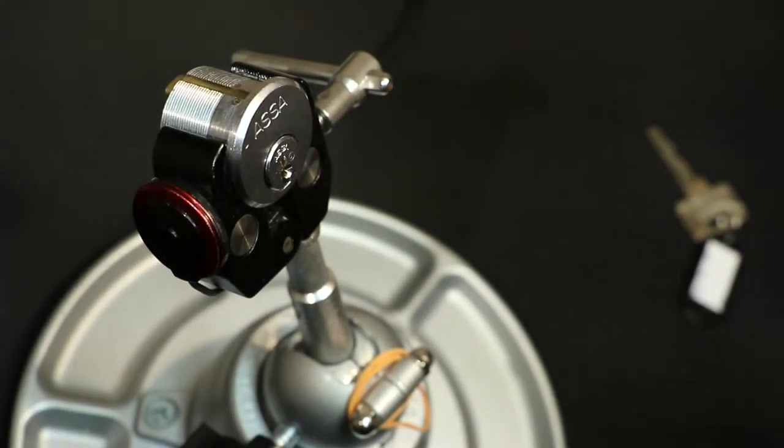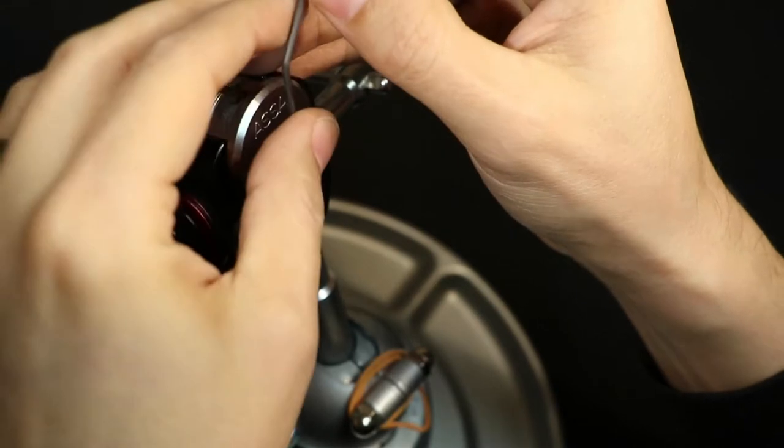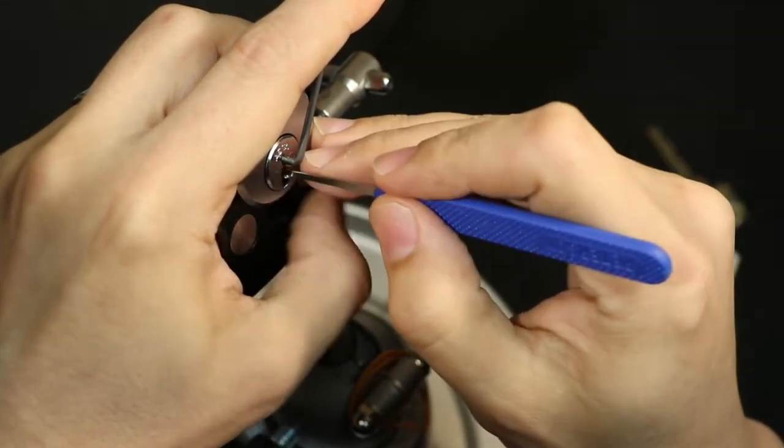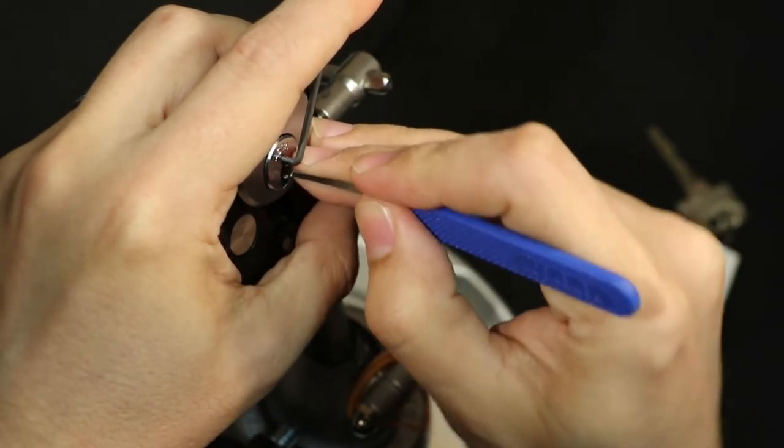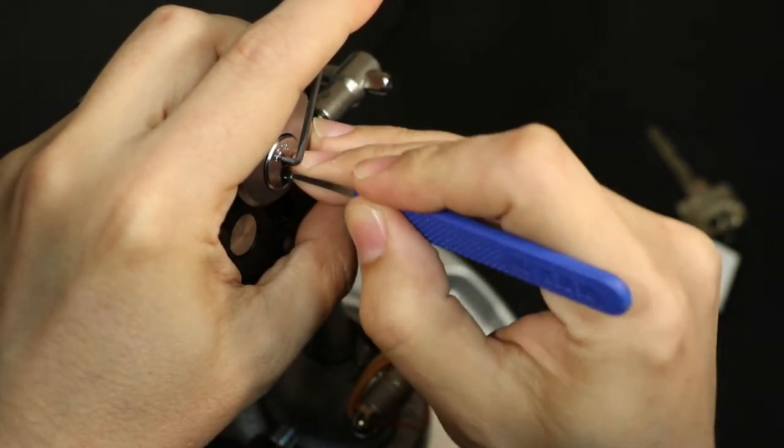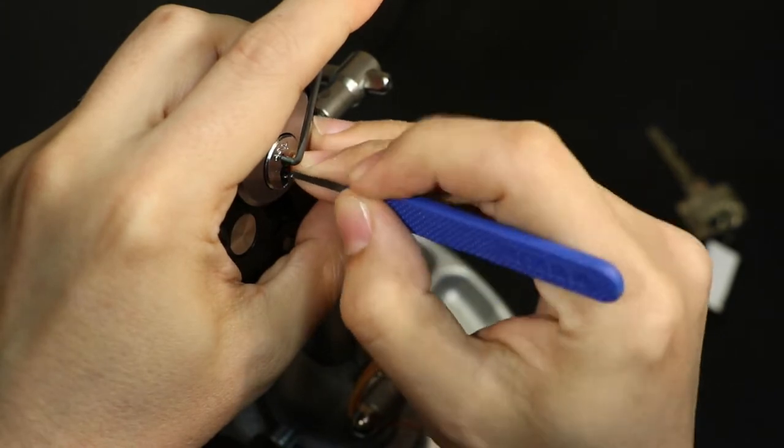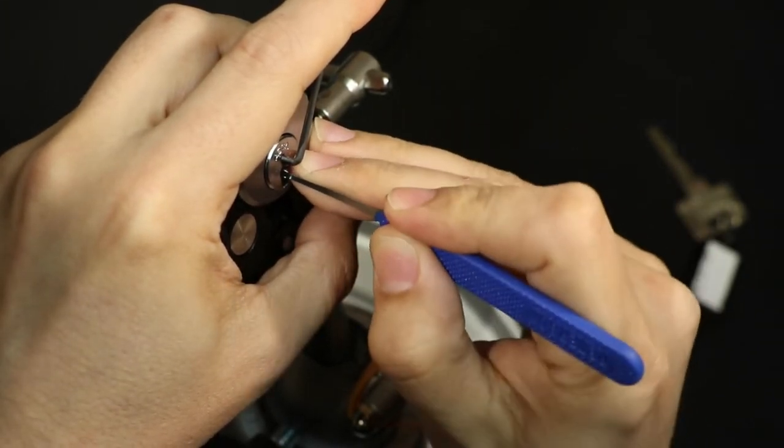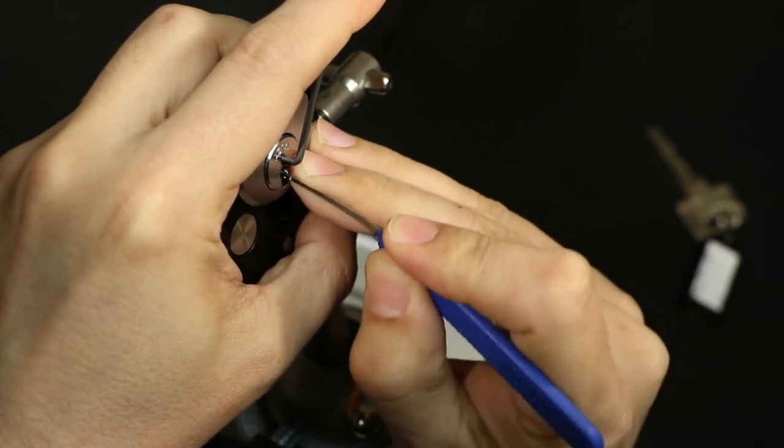So the first thing you do is you just want to get into a false set, which is getting all your gin bottles into being set or stuck in their counter milling. So this is straightforward, kind of like just picking a regular lock, so I'm not going to really talk my way through this. I'll just drop it into a false set really quick without much ado.